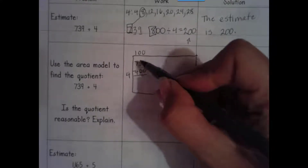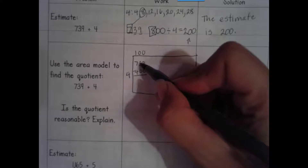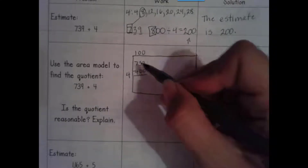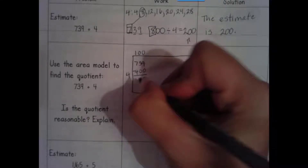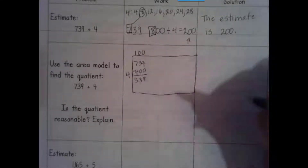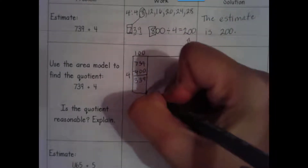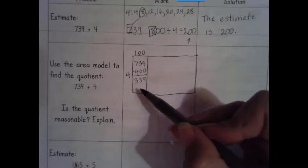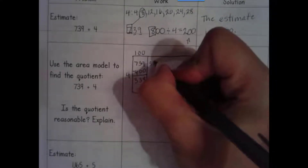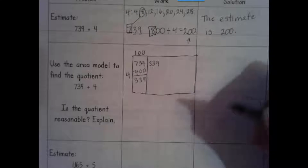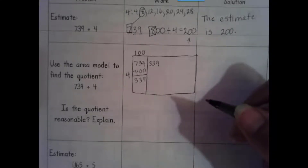I'm going to subtract that out because division is repeated subtraction. We always want to check for regrouping before we start subtracting. I get 339. I can definitely take groups of 4 out of that, so I'm going to put a line here and that 339 is now going to go up here.